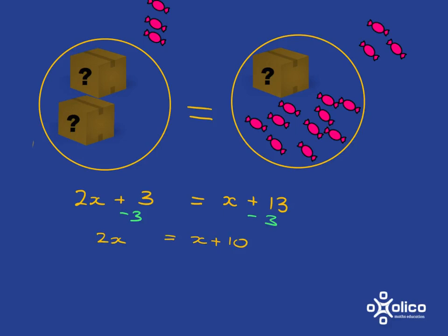OK, the next thing I'm going to do is because I actually don't want any boxes left over here. So what I'm going to do is I'm going to take the box out here and then I must take the box out there to keep it balanced. In terms of my equations, I've taken x sweets out of the one side and x sweets out of the other side. What do I have left then?